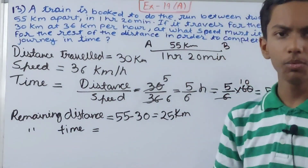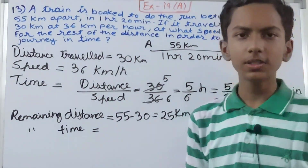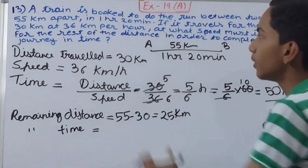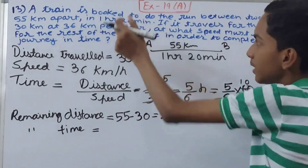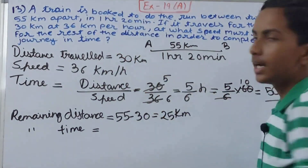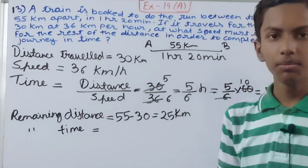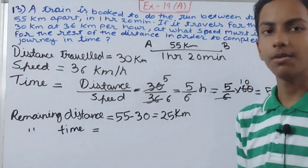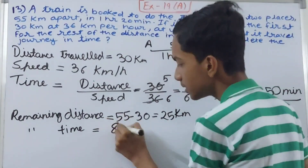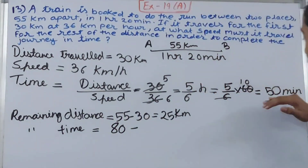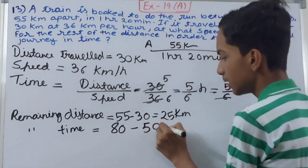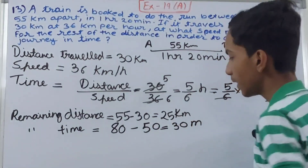Converting one hour 20 minutes into minutes: one hour is 60 minutes, plus 20 minutes equals 80 minutes total. The time already taken is 50 minutes, so the remaining time is 80 minus 50, which equals 30 minutes.